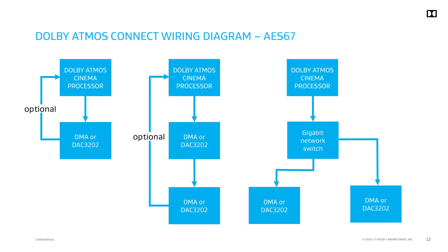When using one or more downstream devices like an additional DAC-3202 or DMA, connections can be made just like with BlueLink, optionally closing the loop. An alternate path is shown on the right in which all of the downstream devices are connected by a single Ethernet connection with no loopback.